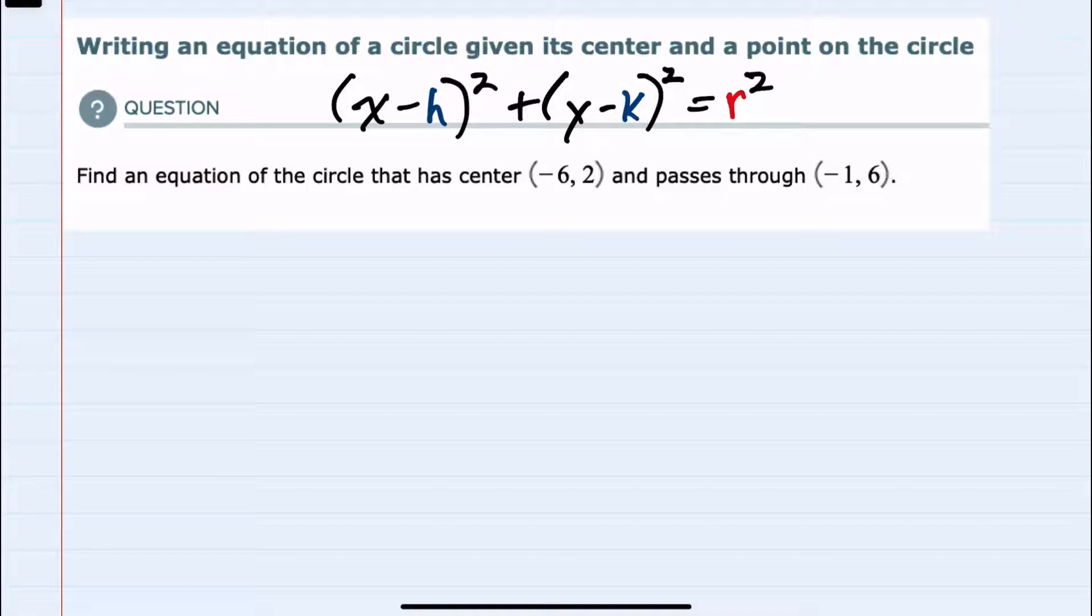And here we have the center so we have h and k. Here h is -6 and k is 2. But we also need the radius r.